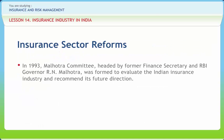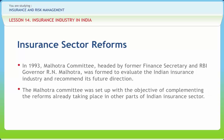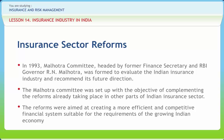In 1993, the Malhotra Committee, headed by former Finance Secretary and RBI Governor R.N. Malhotra, was formed to evaluate the Indian insurance industry and recommend its future direction. The committee was set up to complement reforms already taking place, aimed at creating a more efficient and competitive financial system. Key recommendations included bringing government stake in insurance companies down to 50%, removing GIC's holdings of its subsidiaries so they could act as independent general insurance corporations, and granting greater freedom of operation to all insurance companies.